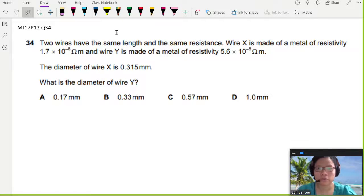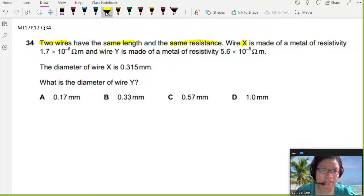In this question, you are going to look at the resistivity and resistance of two wires. Two wires, they have the same length and the same resistance. Wire X is made out of material of resistivity 1.7×10⁻⁸ Ωm. Wire Y is made out of material of resistivity 5.6×10⁻⁸ Ωm.